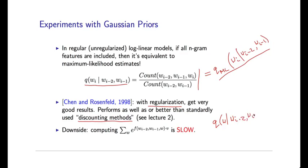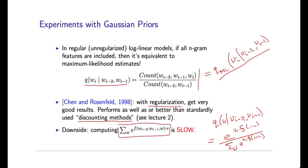The downside in the language modeling context is that computing P(w | context) requires a normalization term summing over all words in the vocabulary, which is slow. Despite this, log-linear models are incredibly effective in many domains, and there may be a resurgence of their use in language modeling as people develop approximations to handle these normalization terms more efficiently. They have the clear benefit of incorporating features in a much more flexible and clean way than linear interpolation methods.